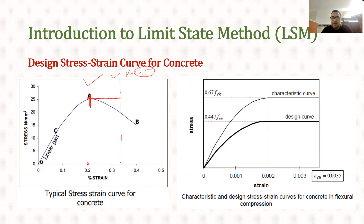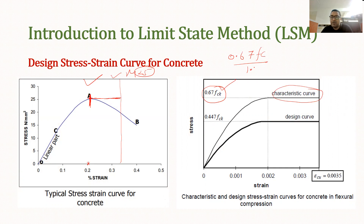0.67 fck is the actual strength, and the curve corresponding to this strength is the characteristic curve showing the characteristic strength. Now, because we are supposed to find out the design strength, and design strength is actually a fraction of this strength, we divide 0.67 fck by the safety factor for concrete, which is 1.5, and we get 0.447 fck.